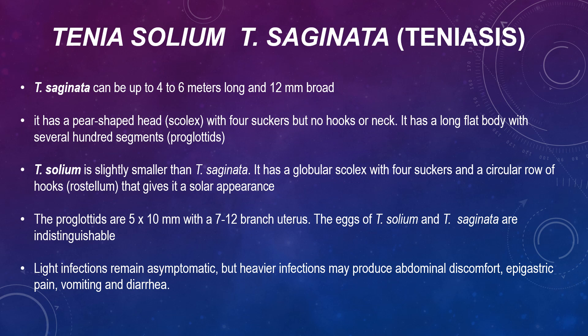Taenia solium and T. saginata — taeniasis. Cestodes have a worldwide distribution, but incidence is higher in developing countries. Infection rate is as low as 1 per 1,000 in North America and as high as 10% in the world. Pork T. saginata has a higher incidence, but this is dependent on the dietary habits.